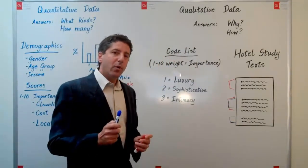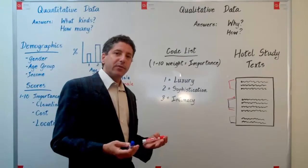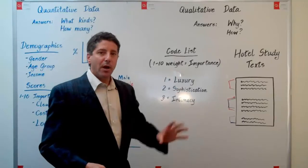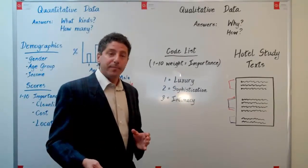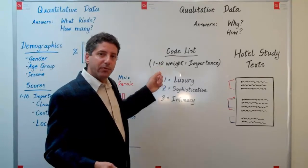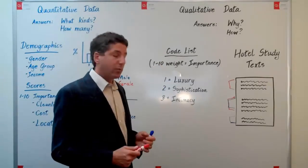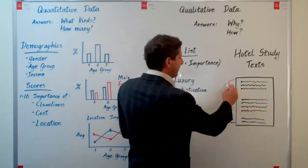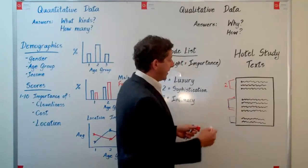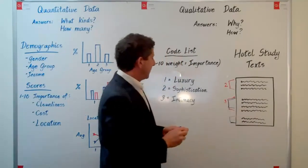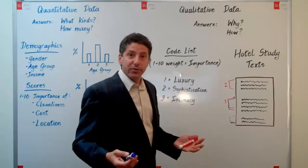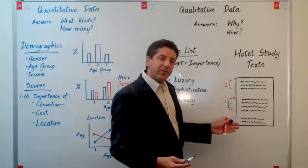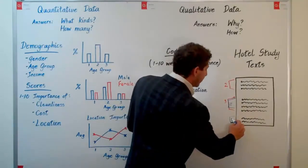Something else we can do with qualitative data is overlay a weighting system onto when those particular codes were applied. For example, people might be talking about luxury, but it might be more or less important to them. So if we use a 1 to 10 weighting scale of importance, we can apply weights alongside the codes. Here somebody's talking about luxury, but maybe they're telling us it's not particularly important to them, so we'll give that a 2. Down here, again, a relatively low weighting. Sophistication, however, is really important to this individual, so we'll give them a higher rating—maybe that's an 8. And here they talked about it again, but not so much importance, so we'll give it a 5.